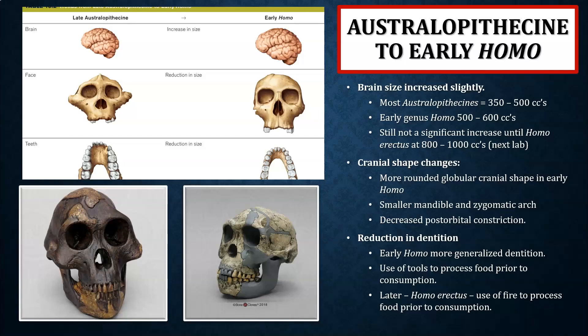We're also going to see some cranial shape changes. For genus Homo, we have a much more rounded, globular cranial shape. The mandible is getting smaller, the zygomatic arch is getting smaller, and we also see a decrease in postorbital constriction. Dentition is also reducing, especially the posterior dentition, indicating that genus Homo had a much more generalized diet.